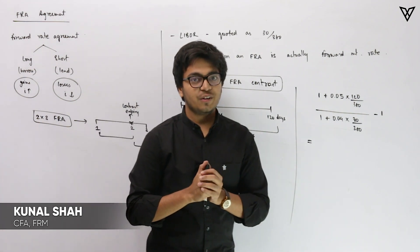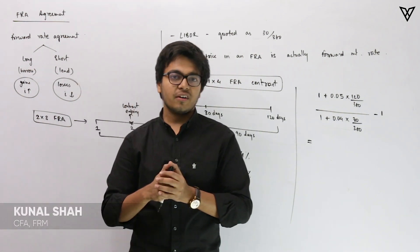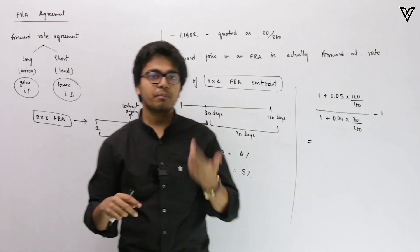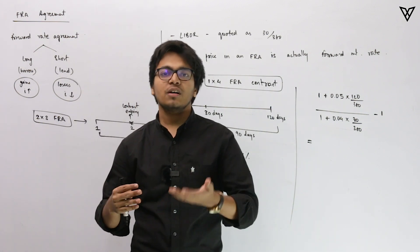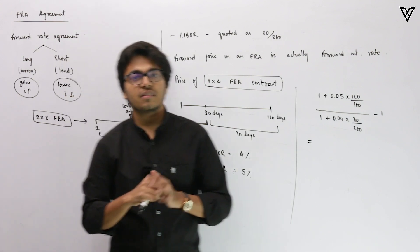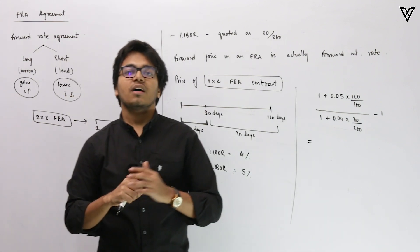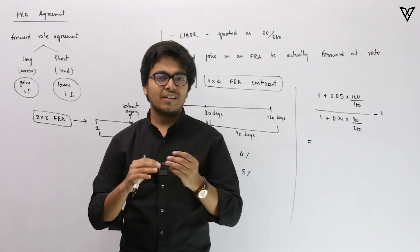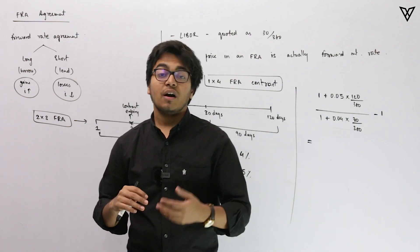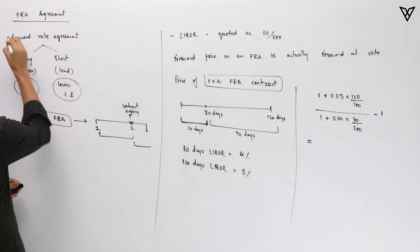In this video we'll be moving forward with another type of derivative contract. We'll understand how exactly to calculate the price as well as the value of the contract we are going to discuss. The contract is the FRA contract, that is a Forward Rate Agreement. I'll give you a recap from level one on what exactly this contract is, and then we'll move forward to calculating the price of the FRA contract.